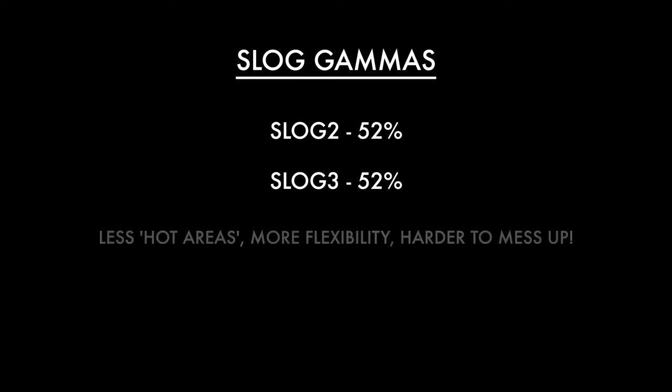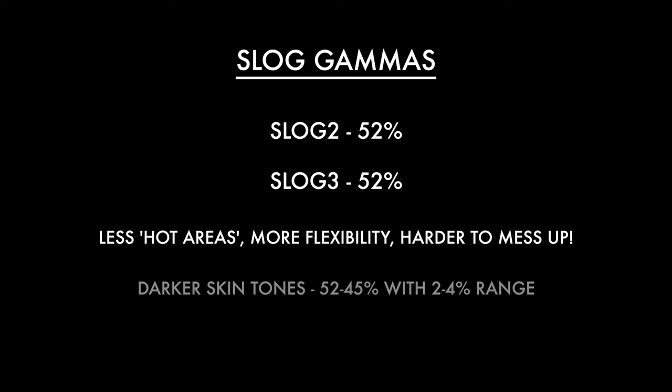Just a couple of extra notes: with the S-log gammas you get less of the hot areas because they have more dynamic range. You also get a lot more flexibility with your exposure — you can underexpose or slightly overexpose and bring it back. It's definitely harder to mess up skin tone exposure compared to the Cine gammas. For non-pasty skin tones, take it from my darkest down to potentially 45%, and due to the extra dynamic range I'd even recommend adding more range — maybe up to 4%.